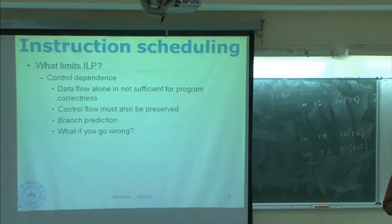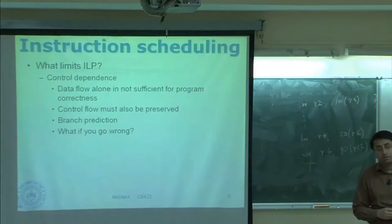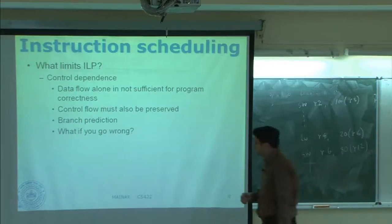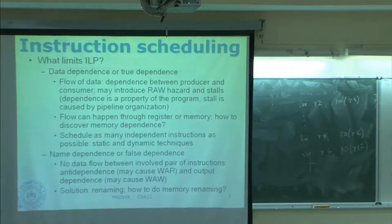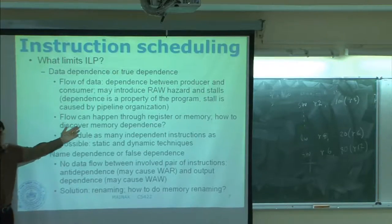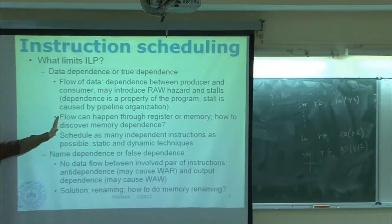The stalls are also going to limit performance — that is the limiter and the source is flow dependence. If you remove all false and control dependence — suppose you have an oracle predictor that is 100 percent accurate and enough registers for no false dependence — what are you left with? Flow dependence. All stalls in your pipeline will come only from this. Making the pipeline shallower would reduce stalls, but as you make the pipe shallower you may lose frequency — so that trade-off has to be looked at carefully. Ultimately true data dependence is what limits your ILP.